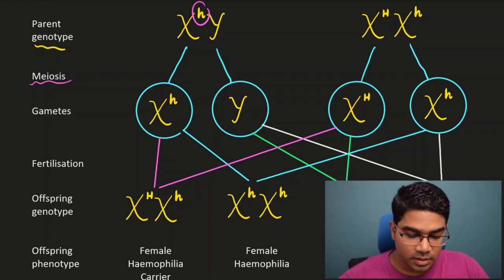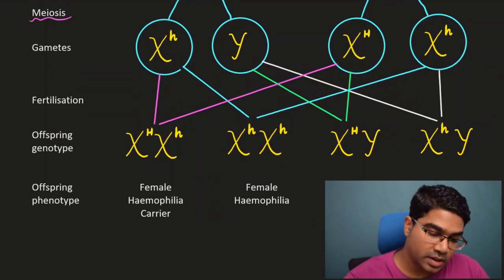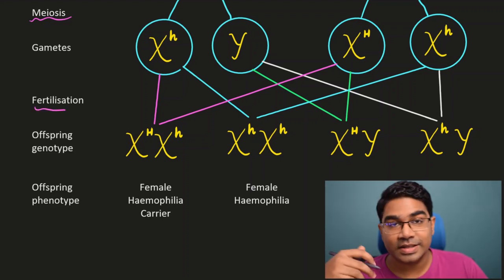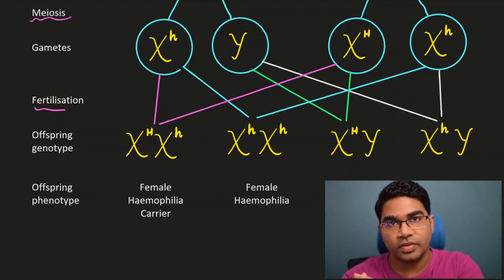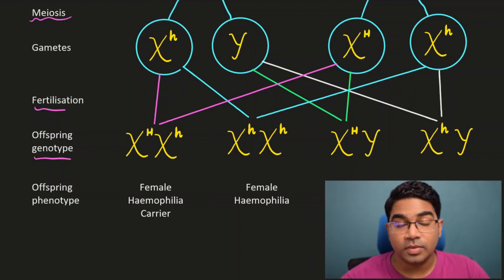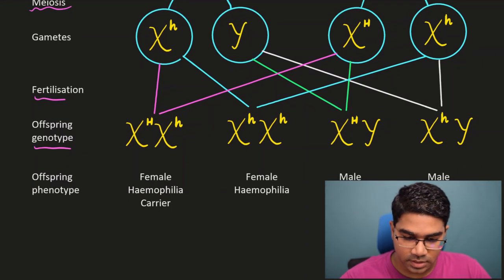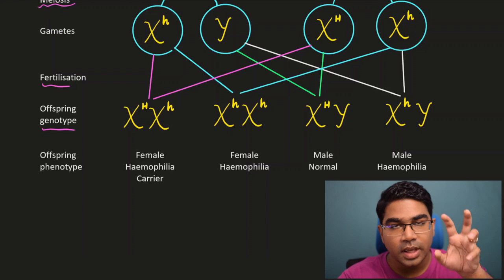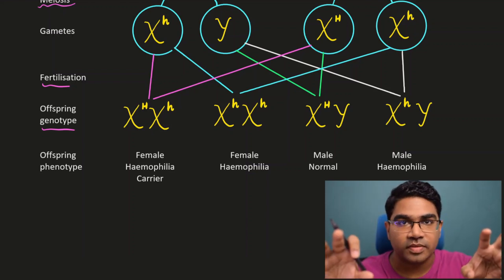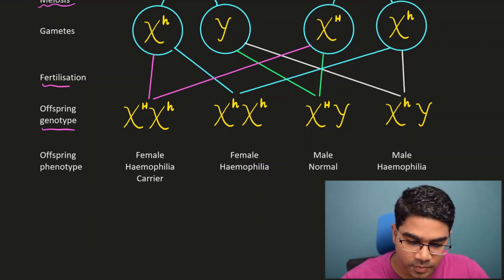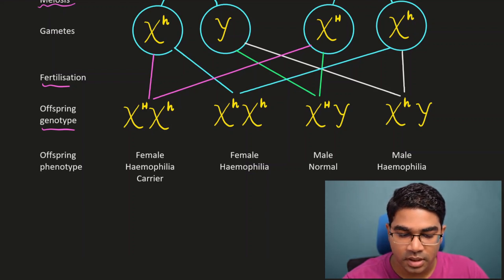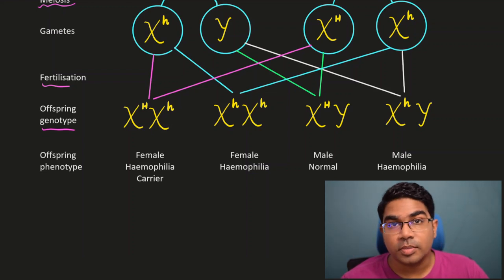During fertilization, the gametes come together and there is fusion of the nuclei - the sperm and the ovum fuse to form the offspring, determining the genotype of the offspring. We work out all possible combinations, taking one gamete from the male and one from the female, giving four possible offspring combinations.